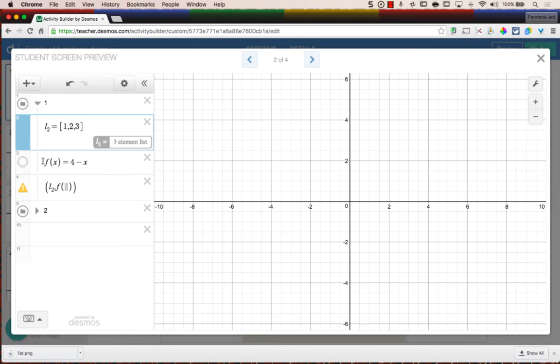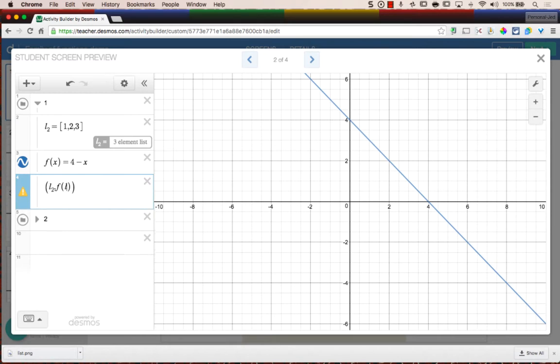Down here I have a function, f of x equals 4 minus x. Instead of having to do multiple separate values to plot multiple points, I can use the list, and it will do all of the elements in the list. So if I were to plot l2 here, instead of having three different points with an x value of 1, an x value of 2, and an x value of 3, it's going to do all three of them. And because I've defined a function here, I can do f of l2.